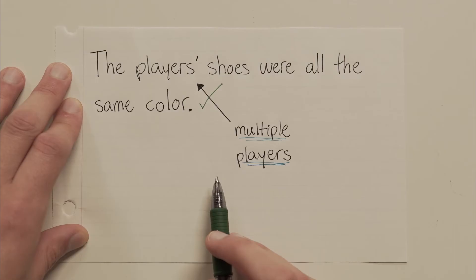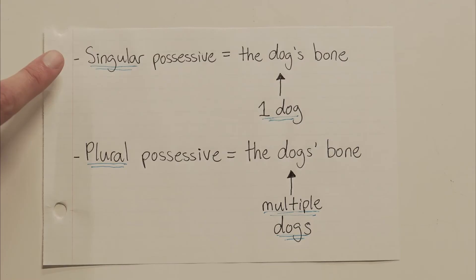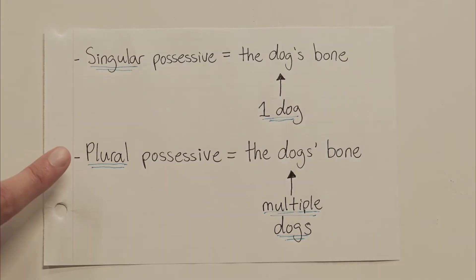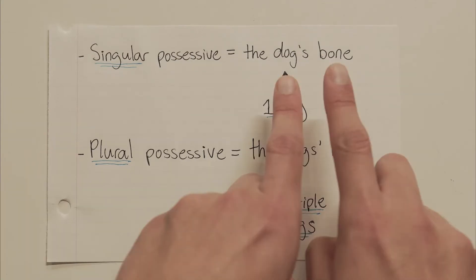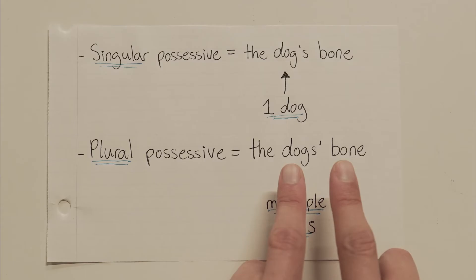So that's it — pretty simple, right? If you've got one dog that has a bone, it would be the dog's bone, d-o-g-apostrophe-s. And if you had multiple dogs that shared a bone, it would be the dogs' bone, d-o-g-s-apostrophe. And as long as you make sure that the possessive noun and the thing that it owns are right next to each other in the sentence, you're all good.